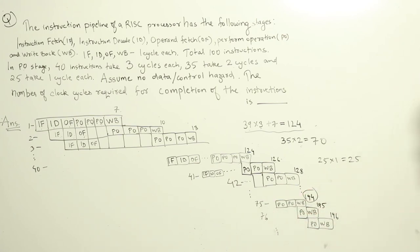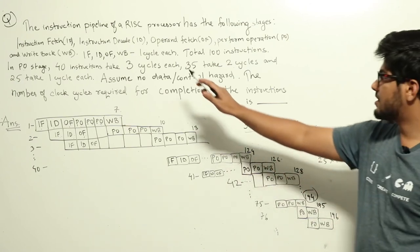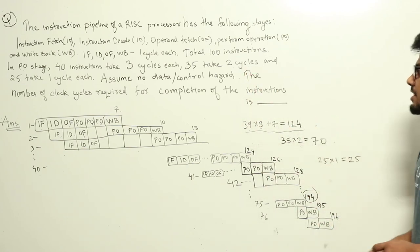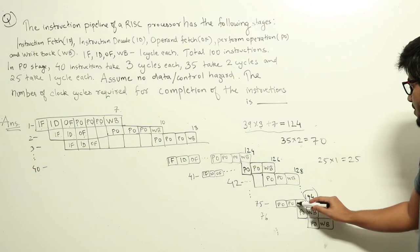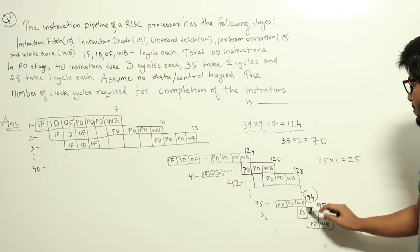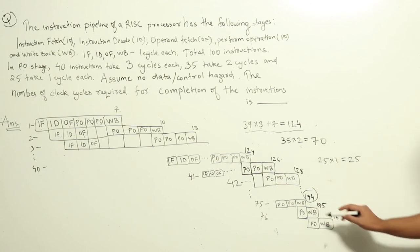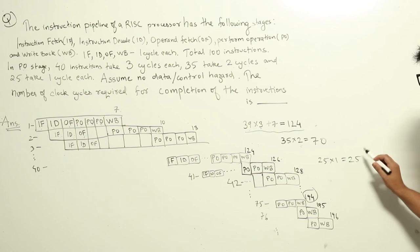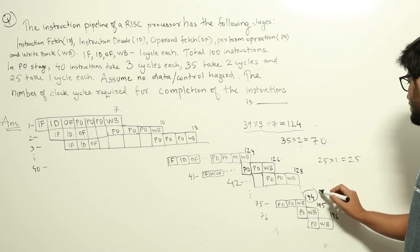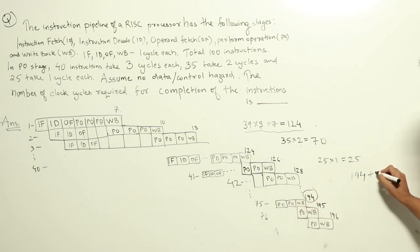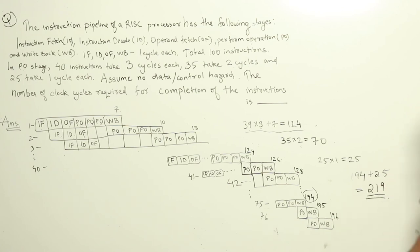Now we just have 25 instructions which take one cycle for the perform operation stage. After the perform operation of the 75th instruction completes, each subsequent instruction adds only one additional cycle for perform operation plus write back. So 25 instructions × 1 cycle each = 25 additional cycles. Adding to 194, the total is 194 + 25 = 219 cycles as the final answer.